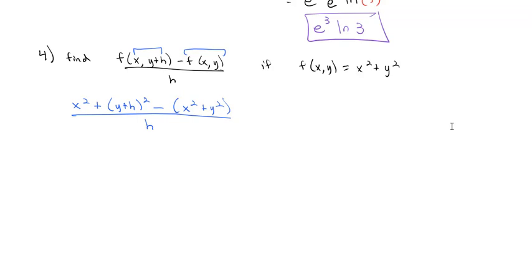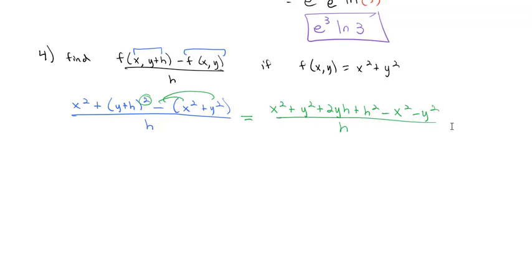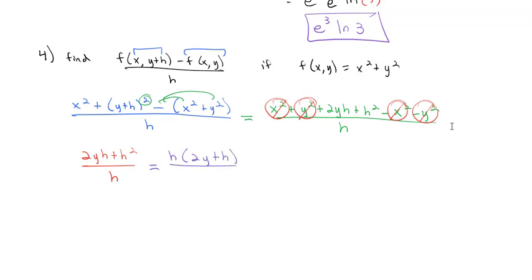We'll simplify, with the goal of removing the h in the denominator. Squaring y plus h gives x squared plus y squared plus 2yh plus h squared. Distributing the negative gives minus x squared minus y squared, all over h. The x squared terms and y squared terms cancel to zero, leaving 2yh plus h squared over h. Factoring out h leaves 2y plus h over h, and dividing out that h gives us the simplified result of 2y plus h.